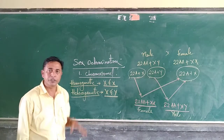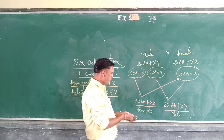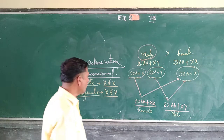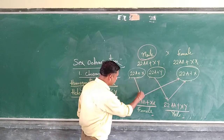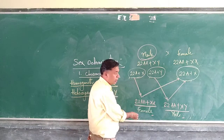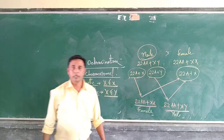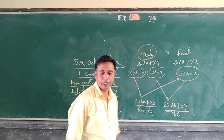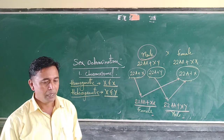So who is responsible for the determination of sex? The male is responsible for the formation of female sex or male sex. If the male passes his X chromosome to the female, it will become female. If the male passes the Y chromosome, it will become male. This is the chromosomal theory of sex determination, and it was proposed by McClung.